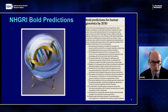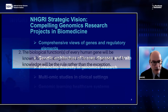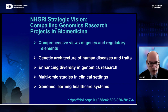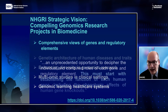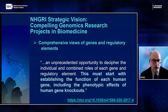You've all seen the published vision document, and as Eric mentioned earlier in the day, there are a number of bold predictions, one of which is that the biological functions of every human gene will be known. In the strategic vision, there are compelling genomics research projects in biomedicine which follow from those ideas — one is to acquire an increasingly comprehensive view of the roles and relationships of genes, regulatory elements, pathways and networks. Drilling down into the compelling projects language, there is an unprecedented opportunity to decipher individual and combined roles of each gene and regulatory element, and this must start with establishing the function of each human gene, including the phenotypic effects of human gene knockouts.